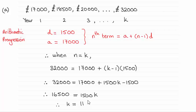To do this, I've written out the salary that she gets each year for the first K years. Remember she started with £17,000 and it went up by £1,500 each year. So in year two it was £18,500, year three it was £20,000, and so on until we reach £32,000 in the Kth year.